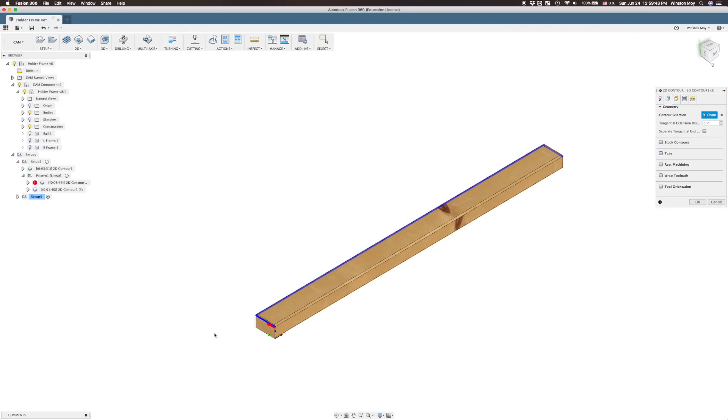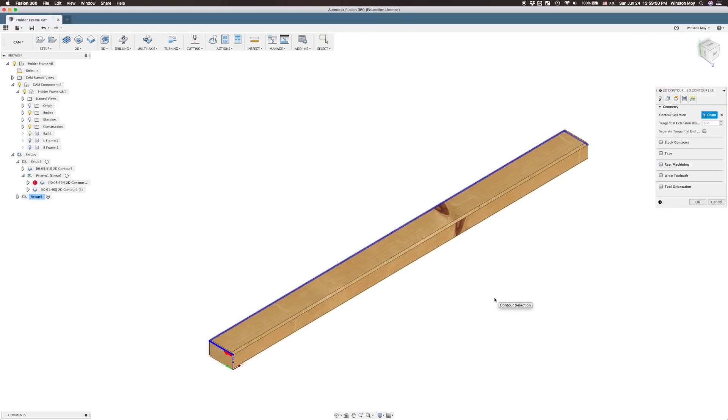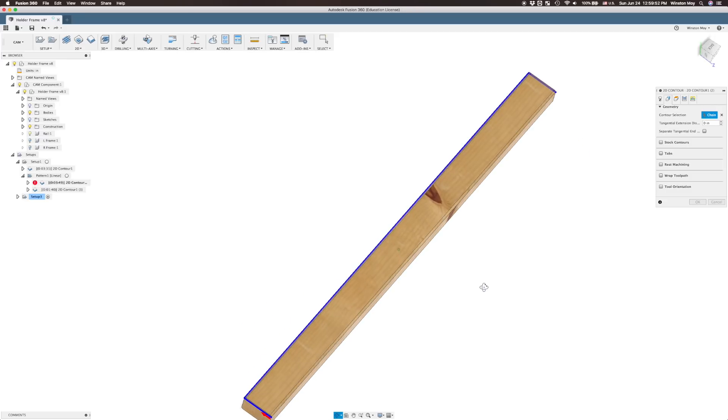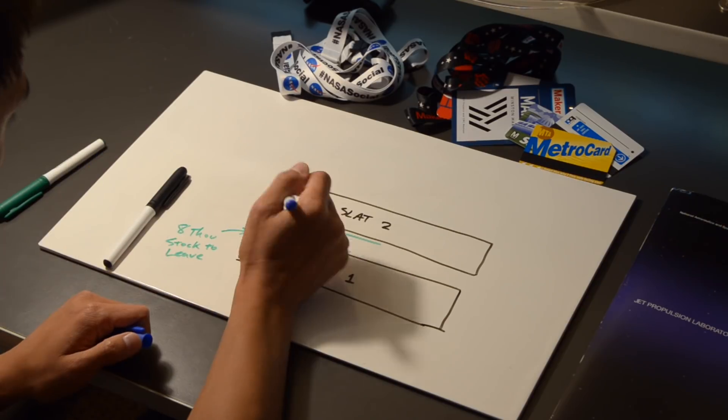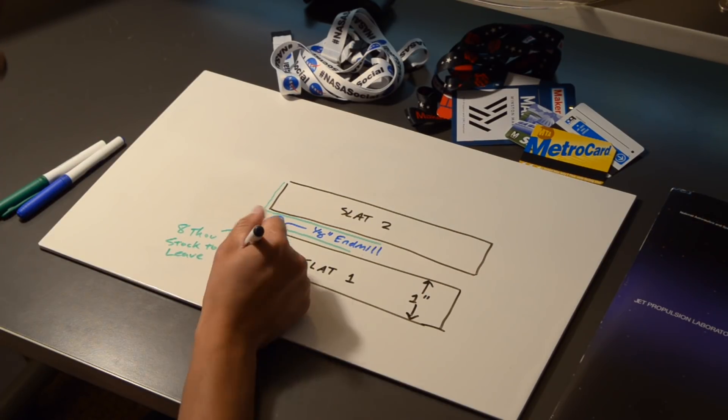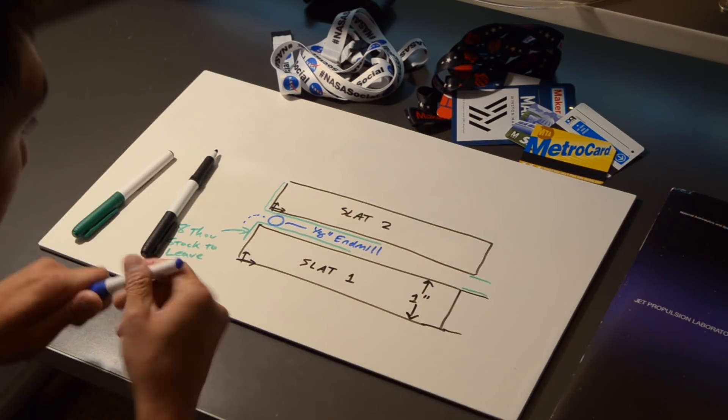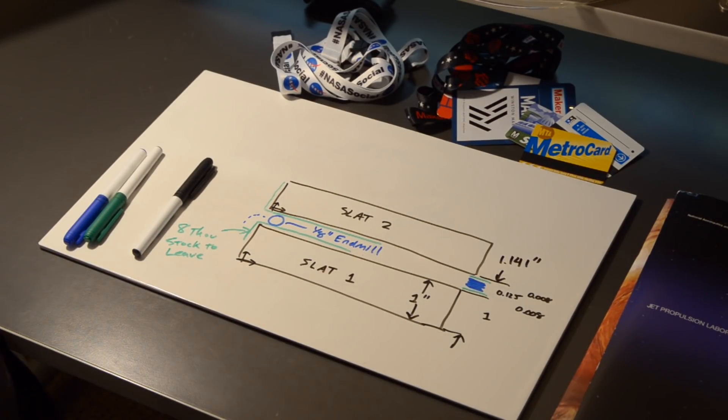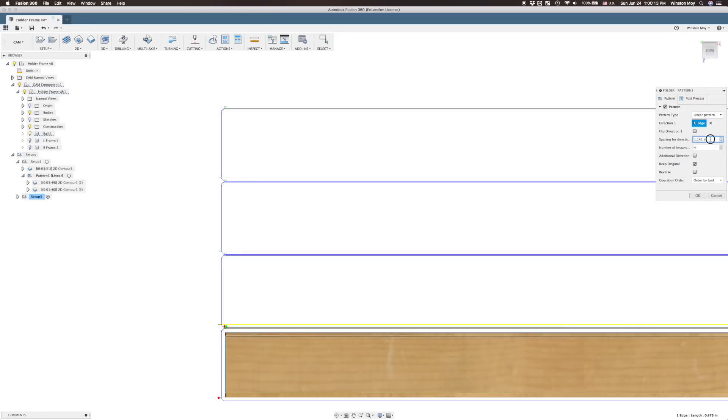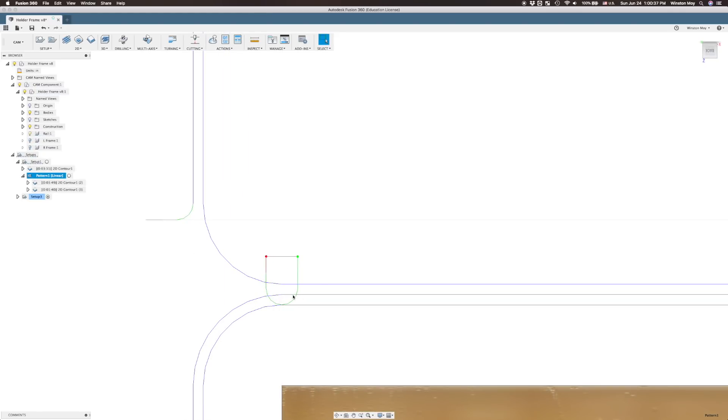Next, we need to determine the pattern spacing needed for these toolpaths to work together. To the whiteboard. Alright, so each slat is one inch tall. The end mill is an eighth inch wide. We're looking for eight thou of stock to leave on the roughing operation, so 1 plus 0.125 plus 0.008 plus 0.008 equals 1.141 inches. Fantastic. Within this pattern, let's also throw in the finishing operation. That looks good to me, but I'm going to say we're going to cut five just so I have a spare in case something goes wrong.